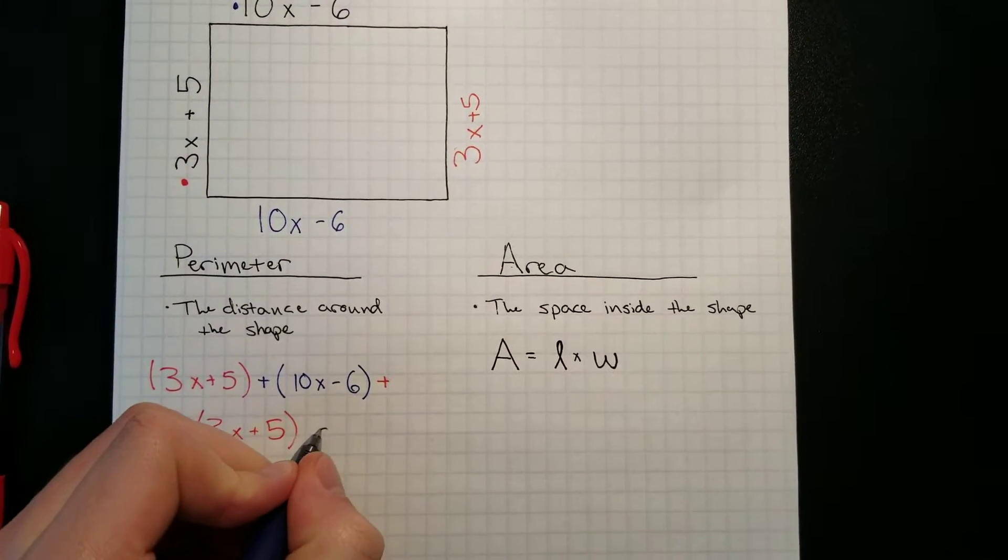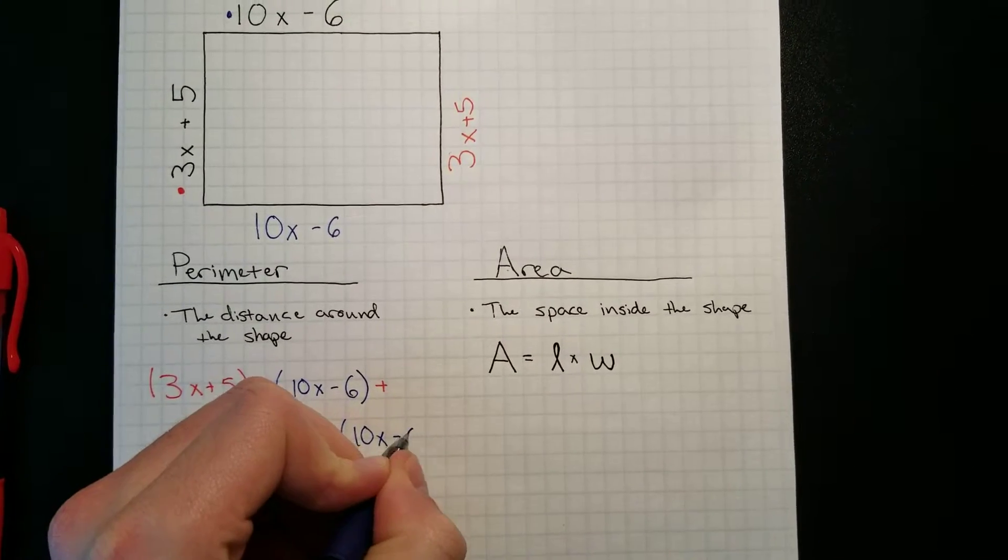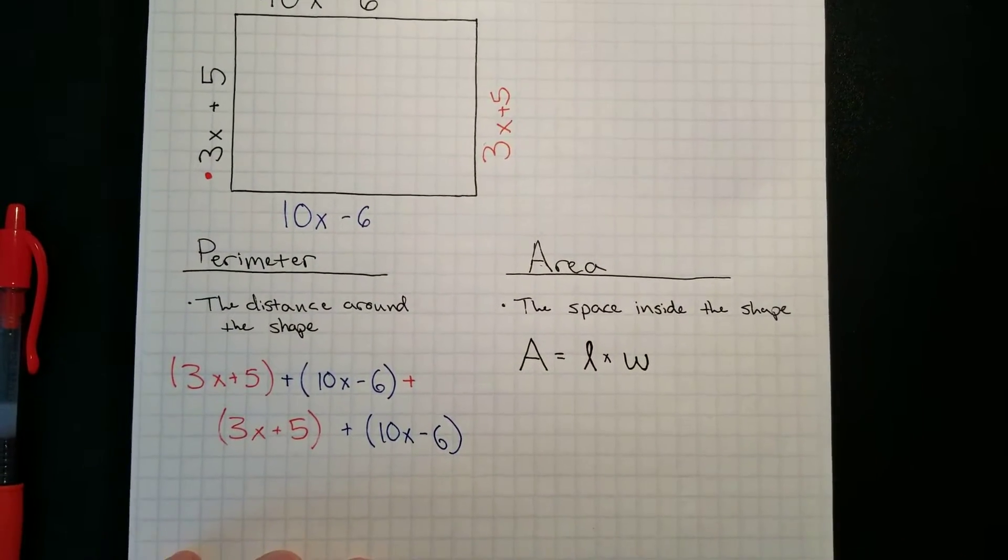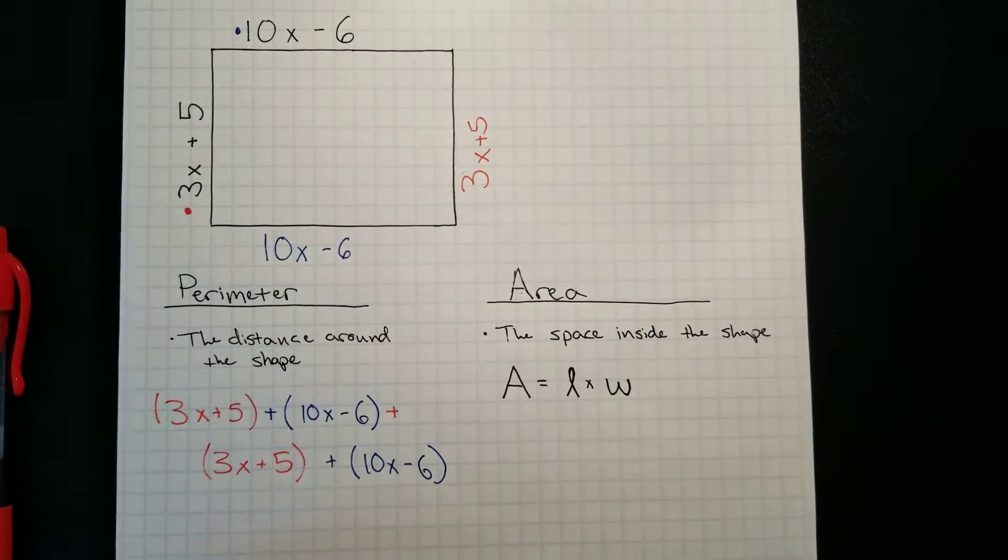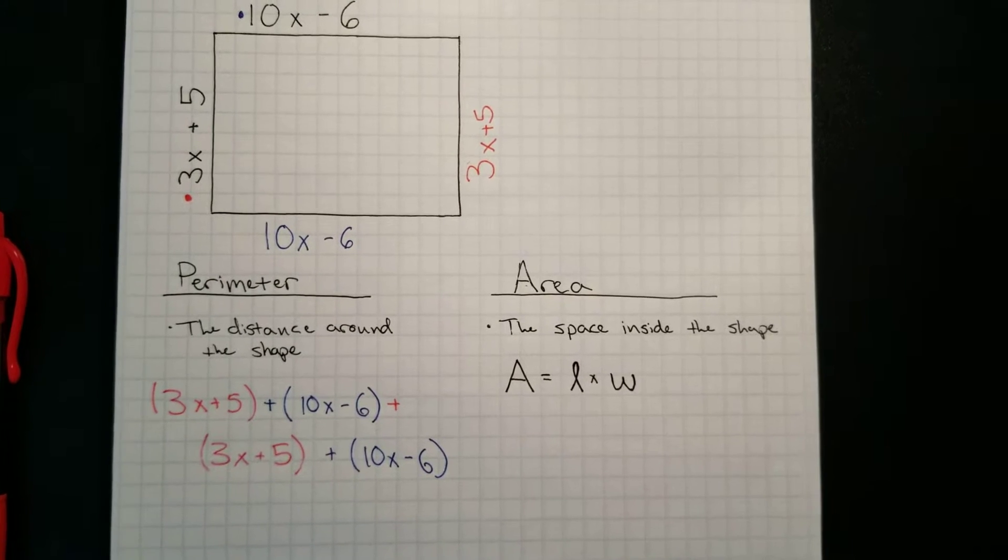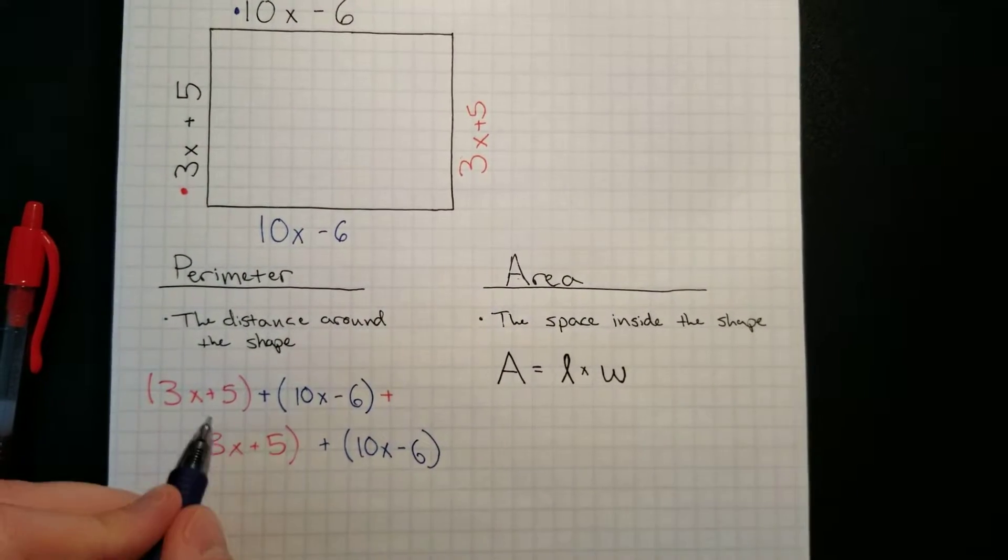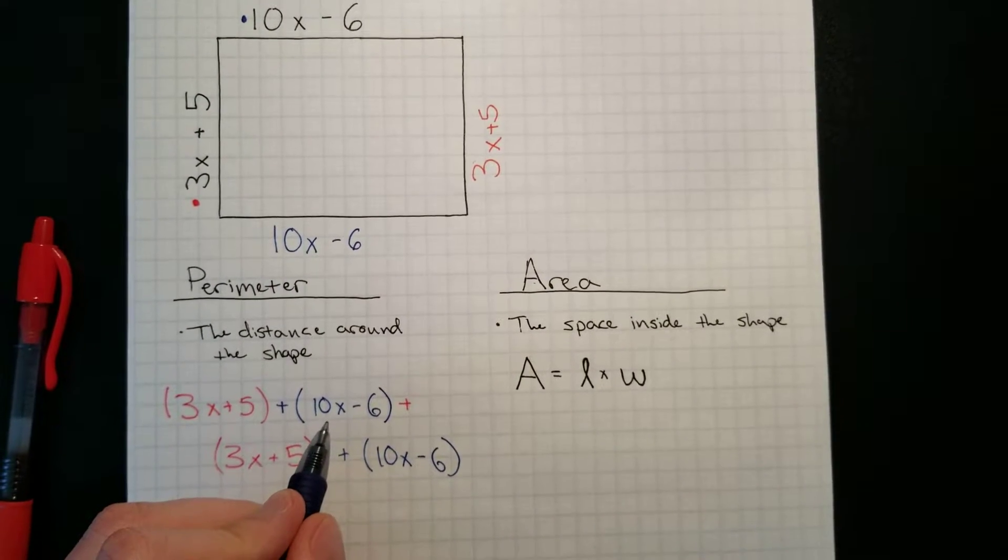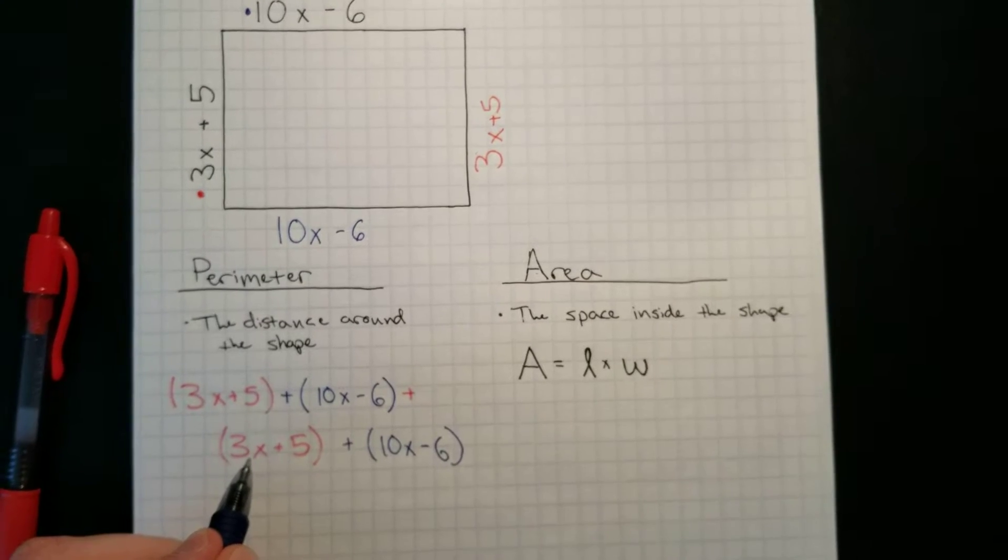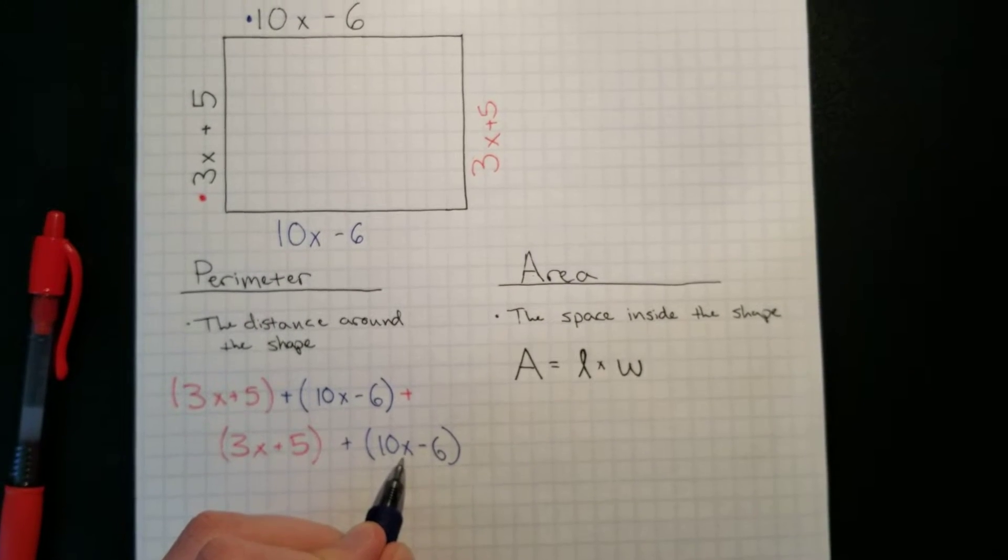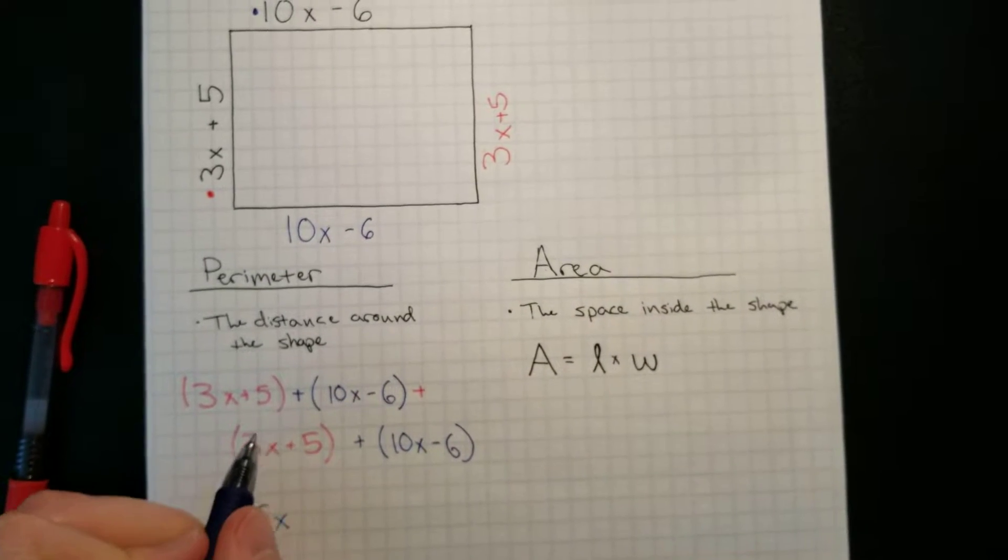And another 10x minus 6. So we have 1, 2, 3, 4, 1, 2, 3, 4 sides, and now we're just going to add these up. So all we have to do, we're going to add up all the x's together. So we have 3x plus 10x is 13x, plus 3x plus 3x is 16x, plus 10x is 26x.